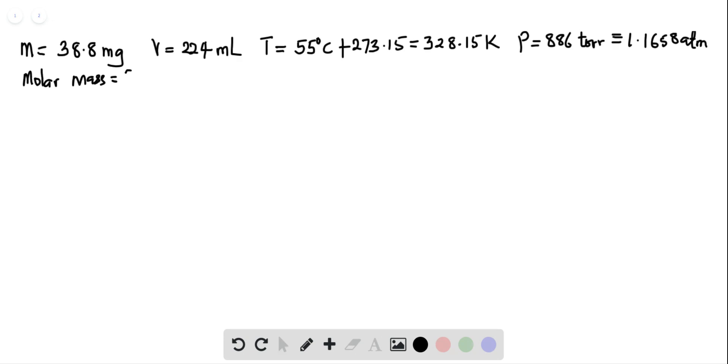Looking at these parameters given to us, the equation to use will be the ideal gas equation, which is PV equals nRT, where n is the mass divided by the molar mass. In this calculation, I will represent molar mass as capital M.